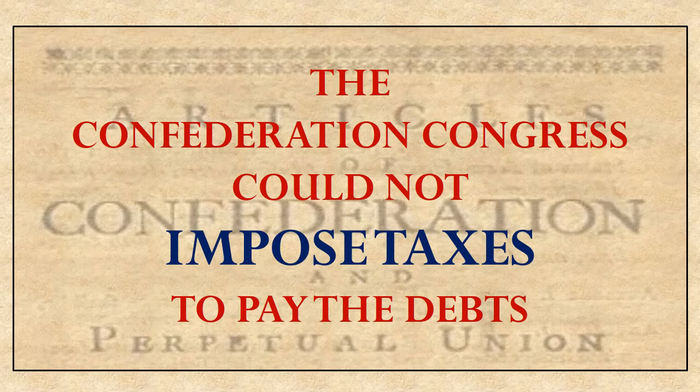The Confederation Congress had no power to impose taxes to pay those debts. Remember, there are 13 separate little countries here—each is sovereign on their own. One of the things they do as a sovereign government over their territory is collect taxes. So for this Confederation Union to get money, they had to essentially turn to the states and say, 'Please, state of Georgia, will you give us a little bit of money to pay off this big national debt?'